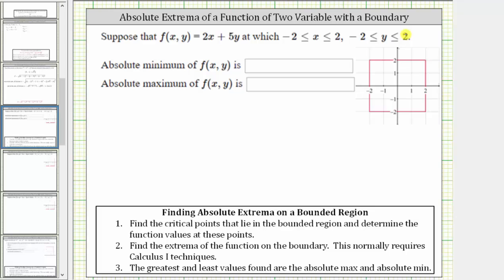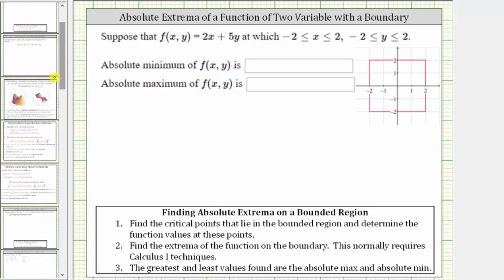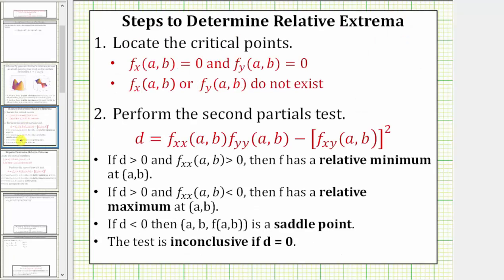Looking at our notes below, the first step is to find the critical points that lie in the bounded region and determine the function values at these points. To find the critical points of a function of two variables, we need to determine where the partial of f with respect to x equals zero, the partial of f with respect to y equals zero, and where the partial derivatives do not exist.